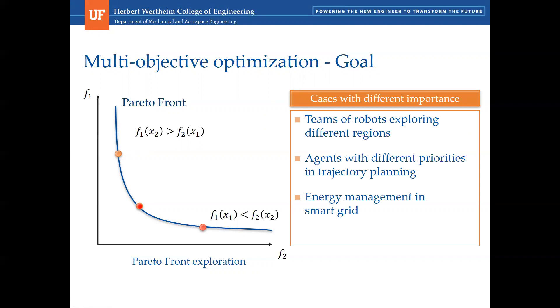It's not difficult to envision cases in which there are objectives with different importance. For example, teams of robots may want to explore different regions of an area, or agents may have different priorities in trajectory planning when minimizing both energy consumption and travel time, or energy management in smart grid.